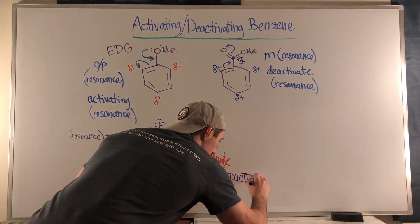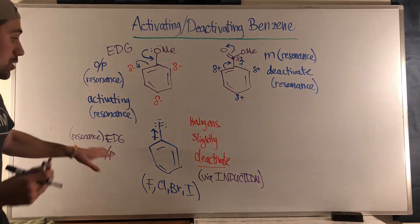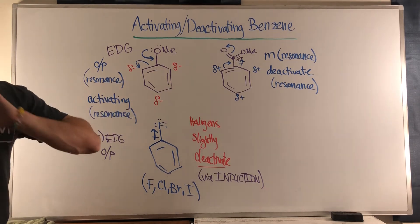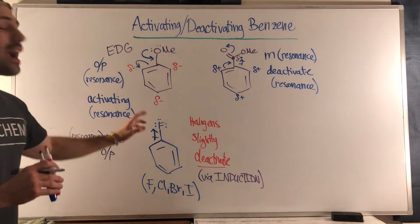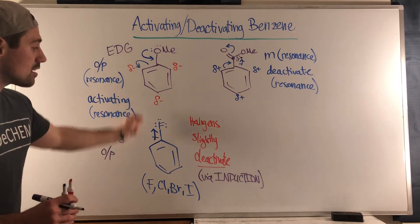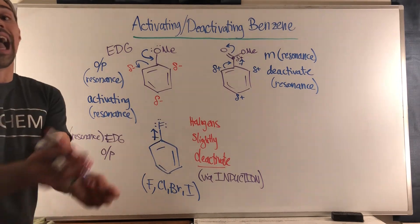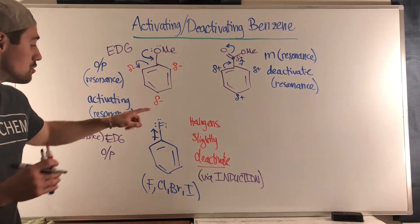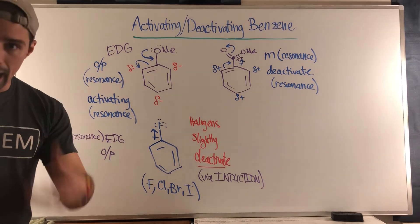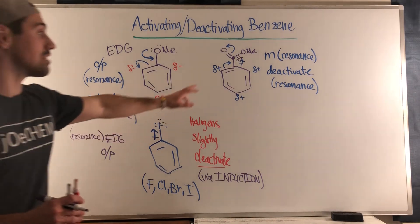The halogens direct ortho/para — the resonance is still valid, don't think that differs at all — however, they are so electronegative and hate sharing that they actually suck electron density out of the ring just by being attached. This doesn't change where they direct, but it changes the reactivity of the ring they are attached to. Halogens slightly deactivate — it's not nearly as bad as a group that fully deactivates, it's just a slight deactivation.